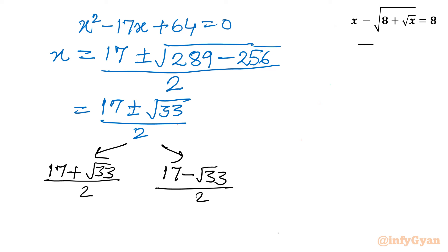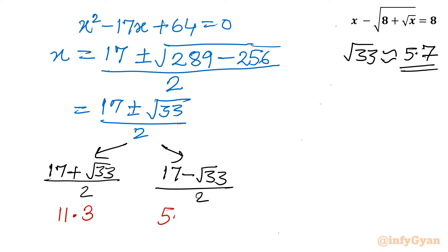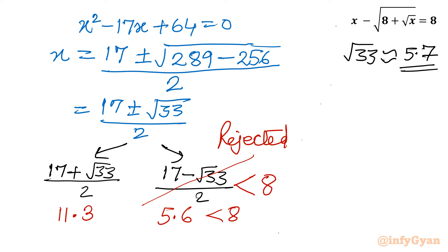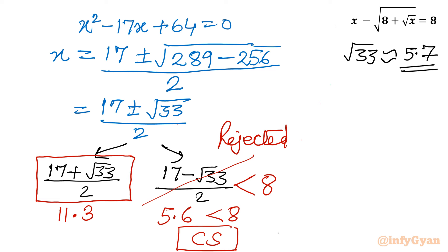Now if we check the value of square root 33, its approximate value is 5.7. Substituting, 17 plus 5.7 over 2 gives approximately 22.7 over 2, which is about 11.3. The second value is approximately 17 minus 5.7 over 2, which is about 5.6. Since 5.6 is less than 8, we reject that solution — it will generate complex solutions. So we accept only x equal to 17 plus square root 33 over 2, as this value is approximately 11.3 which is greater than 8. Final solution is 17 plus square root 33, over 2.